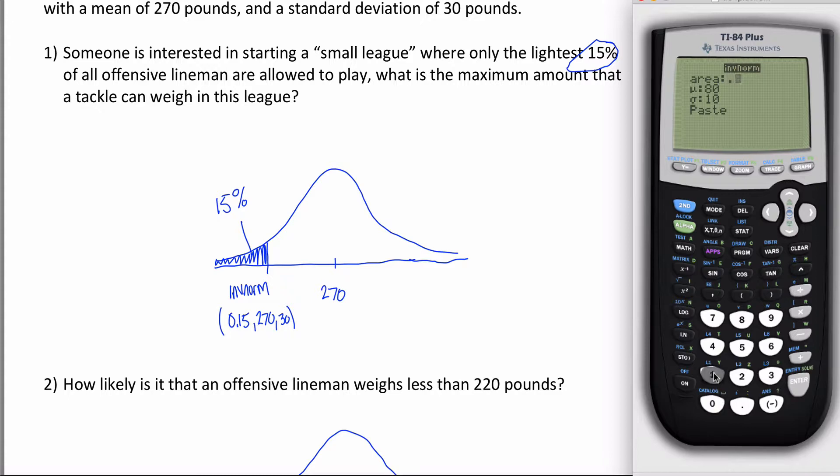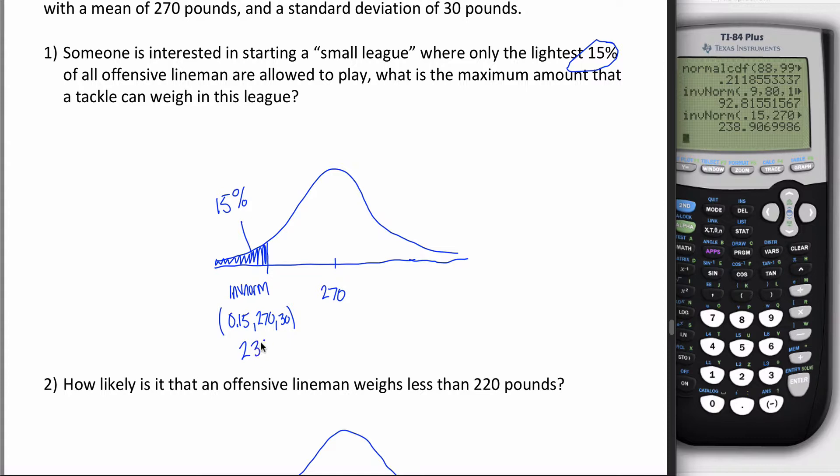Type that into my calculator - go into distributions, grab inverse norm. Area to the left is 0.15, center and spread are 270 and 30 respectively. Hit enter: 238.91. That makes sense, right? If the average weight is 270, that means 50% of people weigh less than this guy. So I would need a lighter weight, lighter than 270, if I only want 15% of tackles to weigh less than that person. The answer is 238.91 pounds.